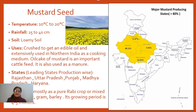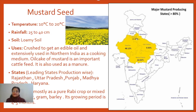The rainfall required for mustard seed is very less — only 25 to 40 centimeters, which is less than 50 centimeters. Even in areas with less rainfall, irrigation facilities are provided to support this crop. It needs very little water. Mustard is a rabi crop — it is grown as a pure rabi crop in most areas, and many times it is grown mixed with another main crop like wheat, gram, or barley.